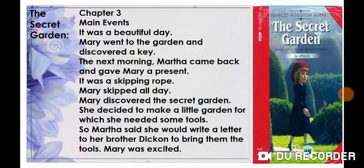I need you to read chapter number three thoroughly. I'm just listing the main events here, but you need to read the chapter thoroughly. It was a beautiful day. Mary went to the garden and she discovered a key — it was Robin who led her to this key. The next morning, Martha came back and gave Mary a present: a skipping rope. So Mary skipped all day. She also discovered the secret garden and decided to make a little garden for herself. For this she needed some tools, so Martha suggested she would write a letter to her brother Dickon to bring some tools. Mary was really excited to meet Dickon for the first time.